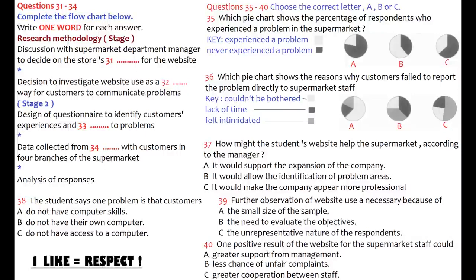I found that out of the total number of customers investigated, 64% had at some stage encountered a problem in a SuperSave store. Out of these people, the vast majority said that they hadn't reported the problem to any member of staff — they just kept it to themselves. About 25% of the people I interviewed said the reason was that they couldn't be bothered, and a slightly smaller percentage said that they didn't have enough time. But 55% said the reason was that they felt intimidated. I finally asked if they would be more likely to complain if they didn't have to do it face-to-face, and nearly everyone I asked said that they would — 95% to be exact.